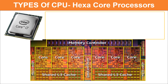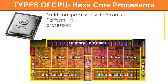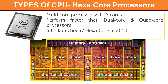The hexa core processor is another multi-core processor that comes with six cores and has the power to perform tasks even faster than dual core and quad core processors. For computer users, hexa core processors are nothing new because Intel has already launched its i7 hexa core processor in 2010.